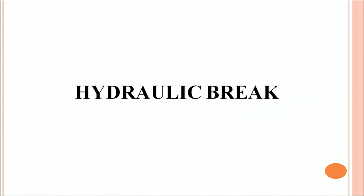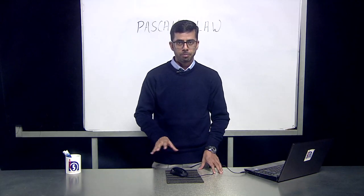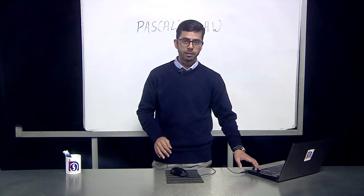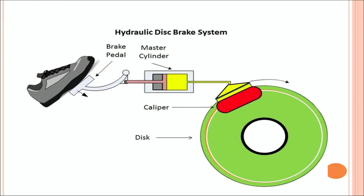Then there are hydraulic brakes, used basically in vehicles and four-wheelers, where the pressure applied gets transmitted through the brake oil to the piston of the slave cylinders, which in turn pushes the brake shoe against the brake drum in all four wheels simultaneously, causing the wheels to stop rotating and the vehicle to come to a stop. In the demonstration, the foot presses the brake pedal which is connected to the master cylinder where the brake fluid is inserted, interconnected to the caliper and the disc. When the caliper engages the disc, it stops the rotation of the wheel.